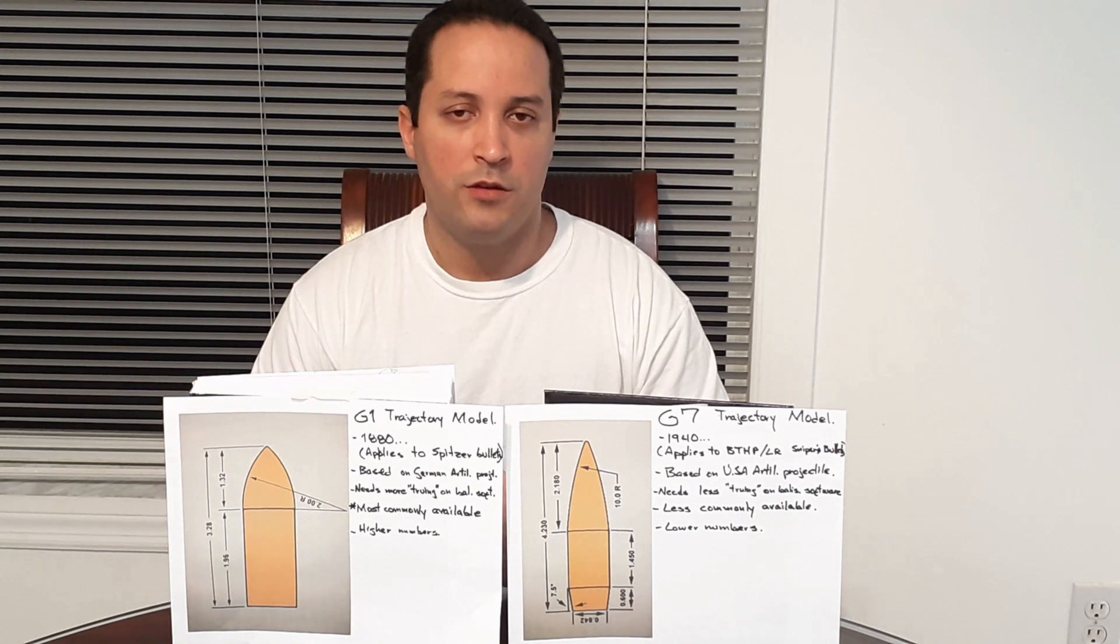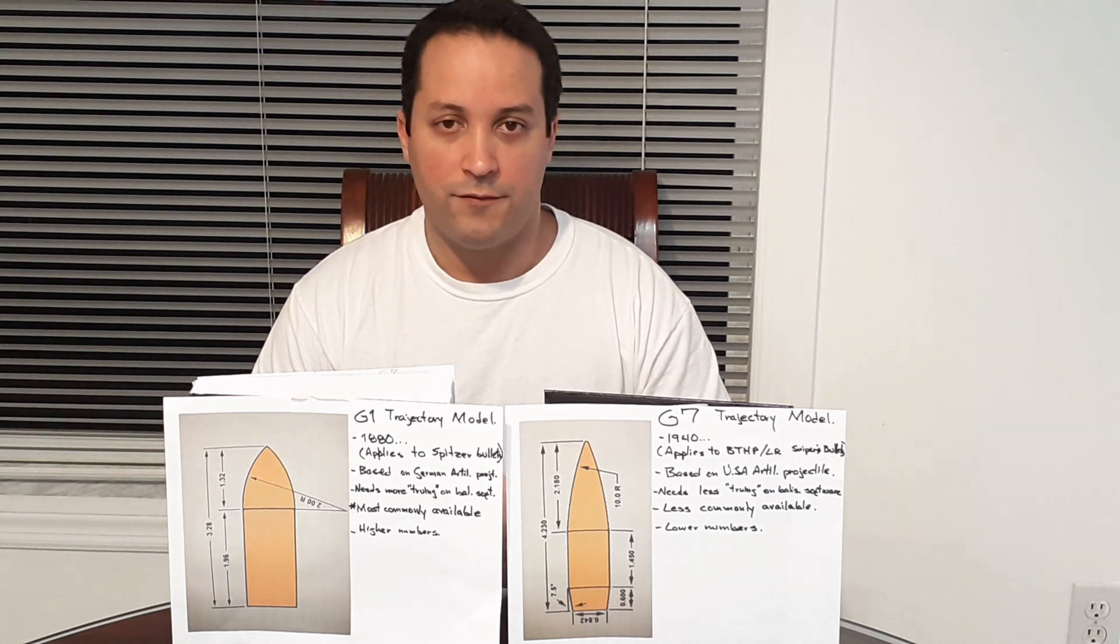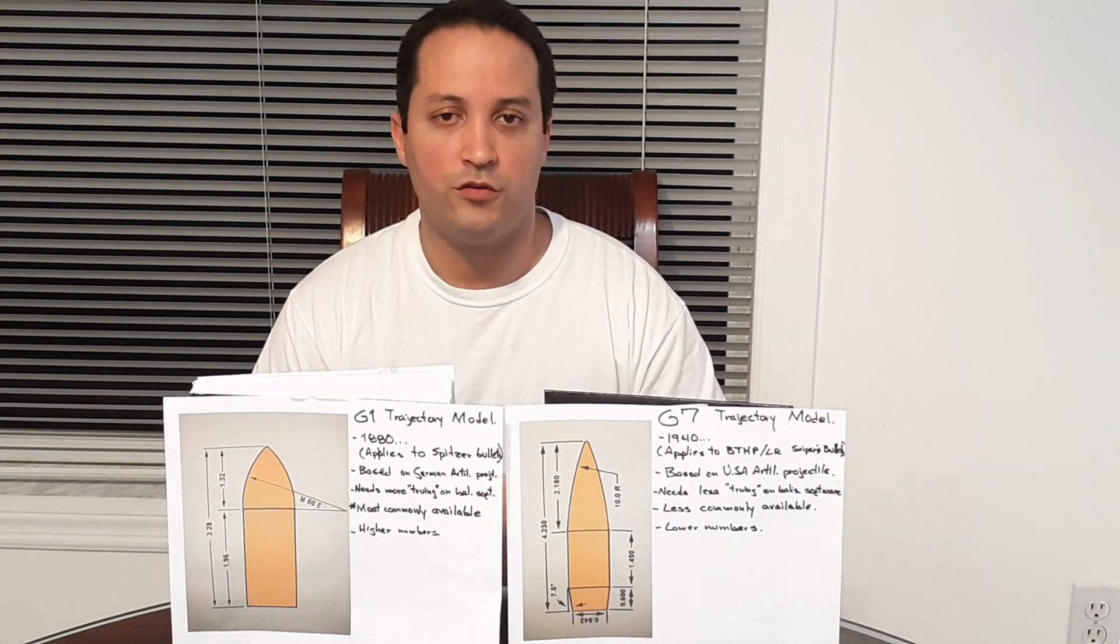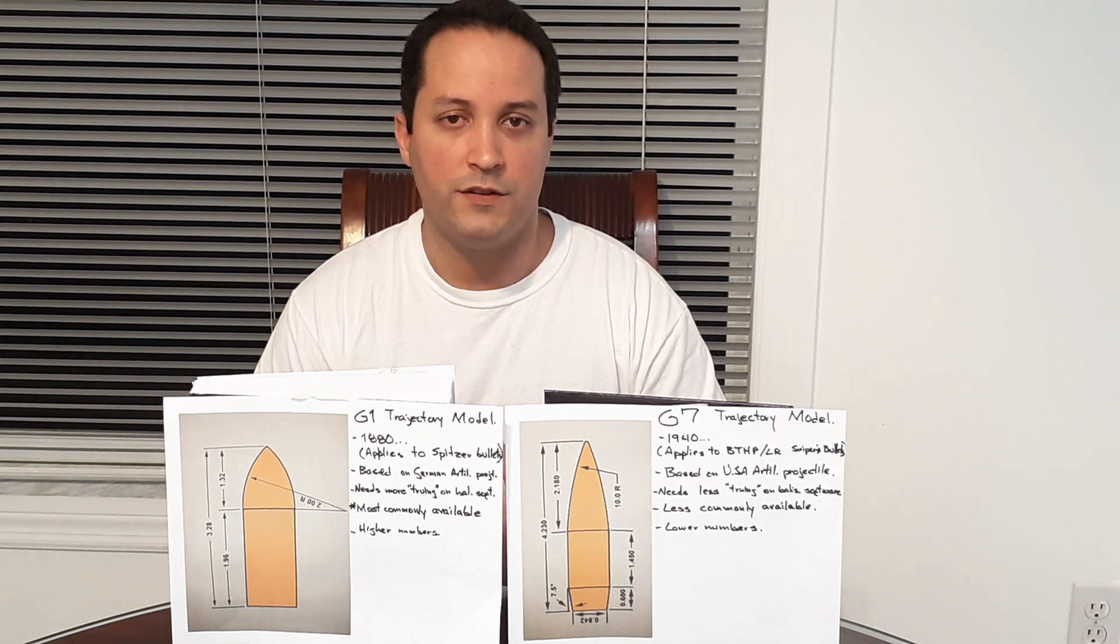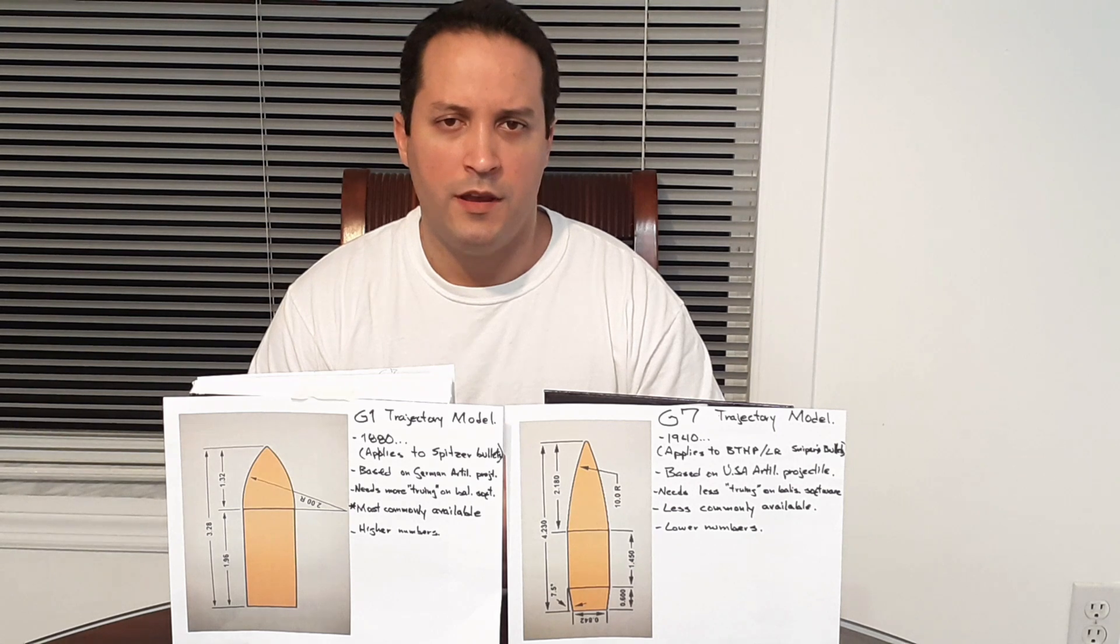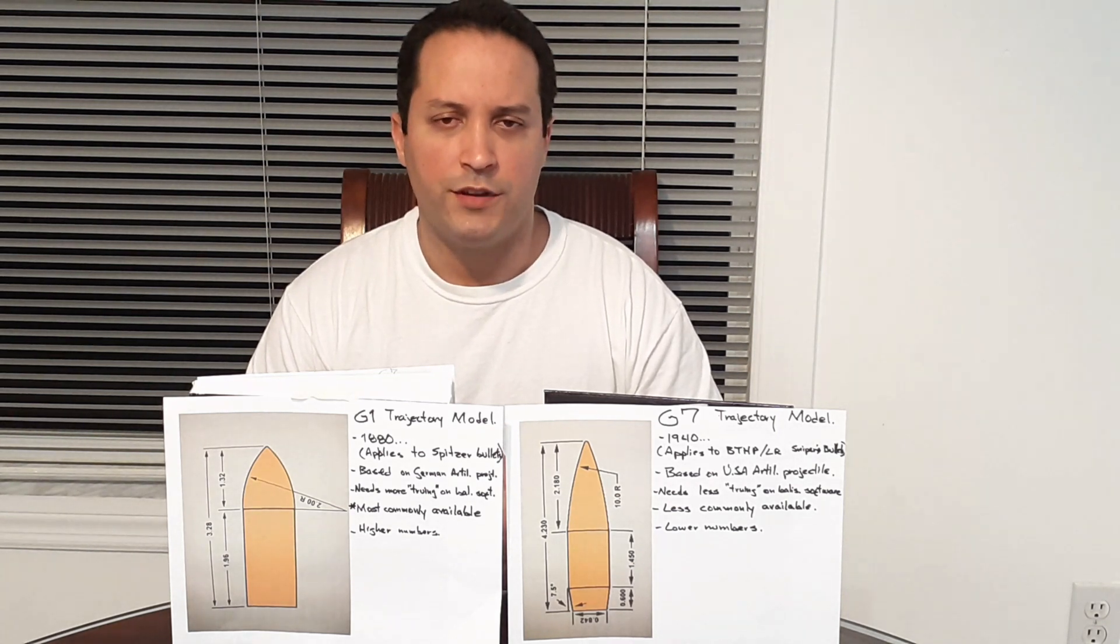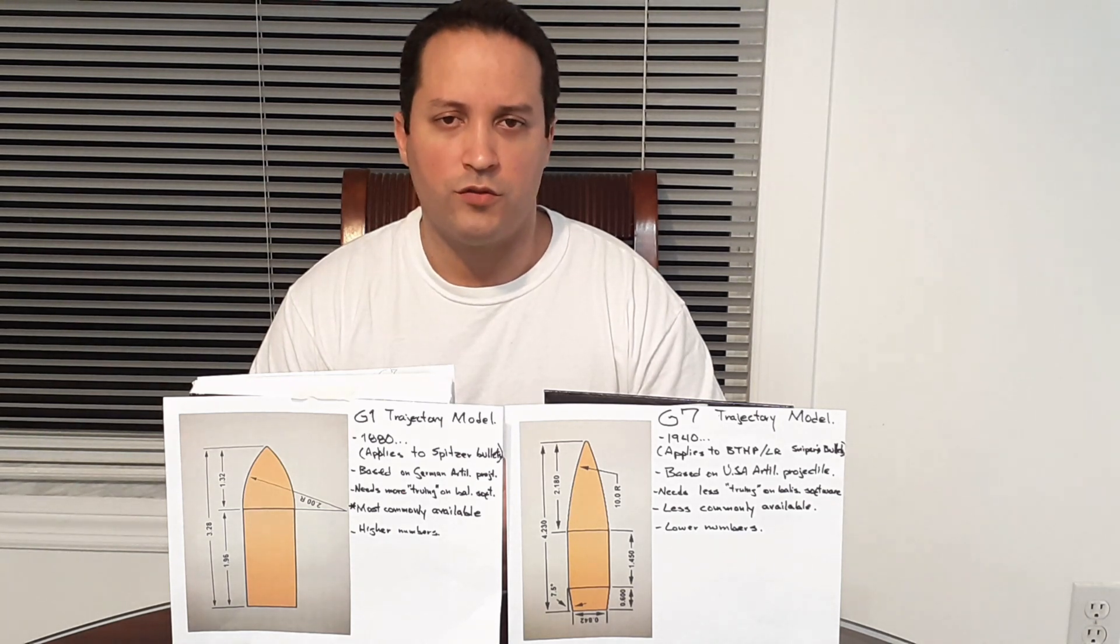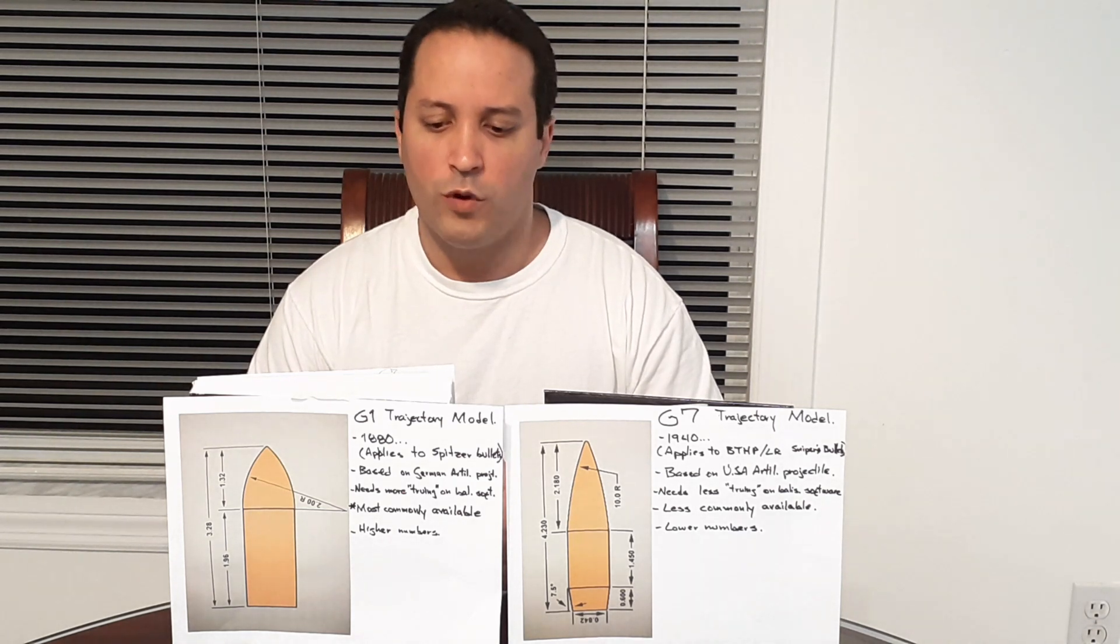It's pretty much muzzle velocity affected. Some other factors affecting your ballistic coefficient are the conditions where you're taking the shots. The atmospheric conditions include pressure, altitude, temperature, and at extreme range, humidity.